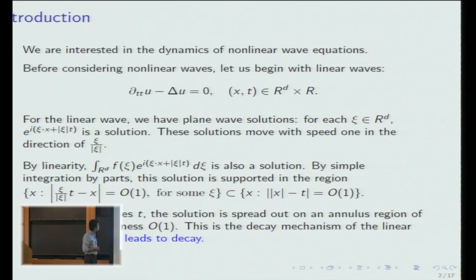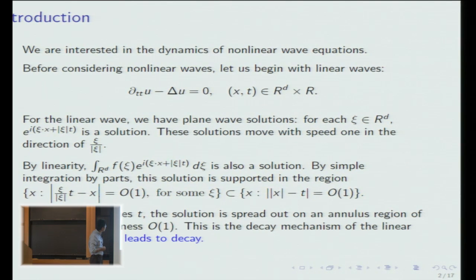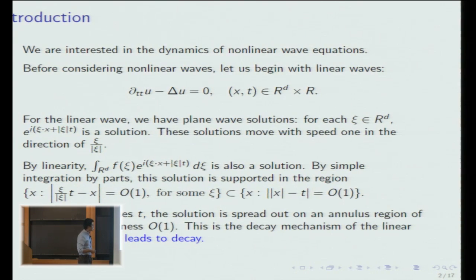So that means this guy will be small unless this guy is of order one. So now this set is containing the set of x such that the modulus of x minus t is of order one. So that means as time goes to infinity, your solution is kind of supported in an annulus with radius t with thickness one. So that's the behavior of a linear wave.